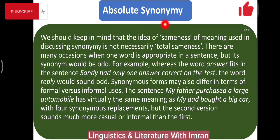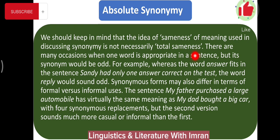Absolute synonymy is very hard to find. When two or more words have exactly the same meaning, that is absolute synonymy. We should keep in mind that sameness of meaning in synonymy is not necessarily total sameness. Two words or phrases can never have exactly the same meaning — there might be dialectal differences, situational differences: one might be used in formal situations, another in informal; one in academic language, another in non-academic; one in technical or medical contexts.